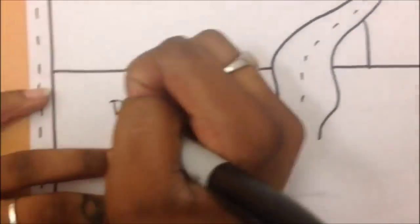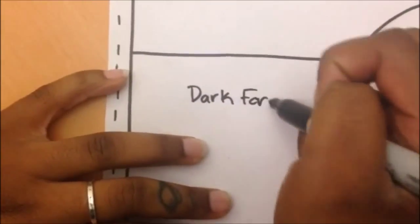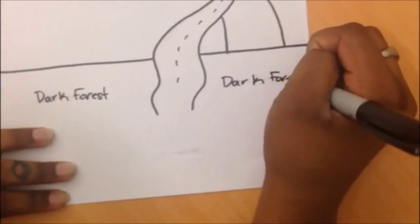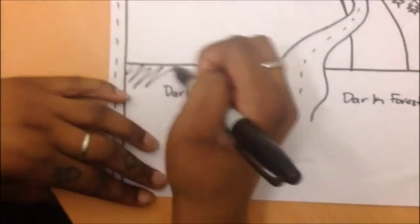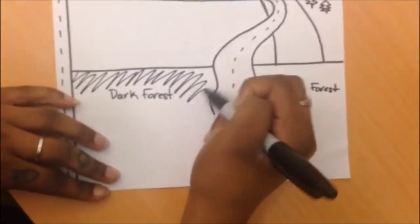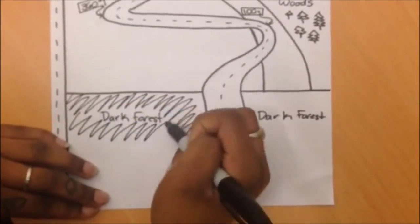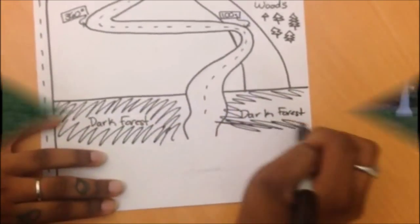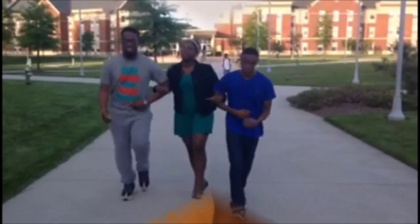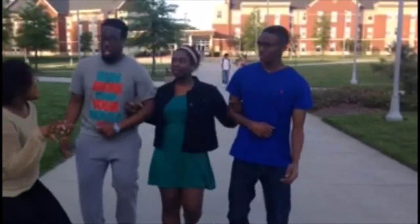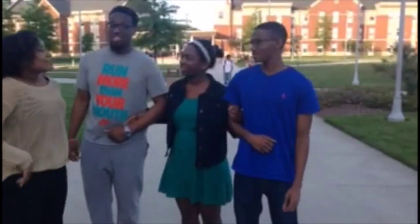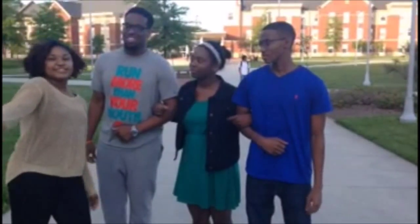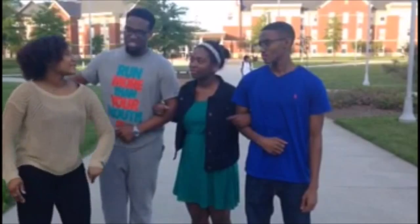Dorothy and her new friends soon find themselves in the dark forest and come face to face with the ferocious Cowardly Lion. 'Roar! Don't be afraid, I'm a coward, but I'll show you to the Emerald City.'